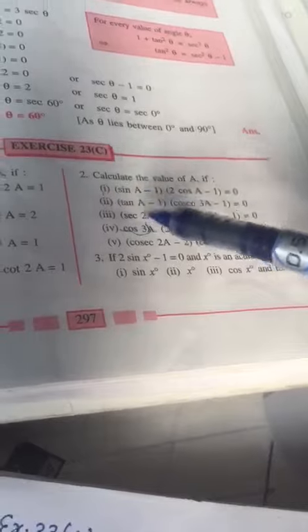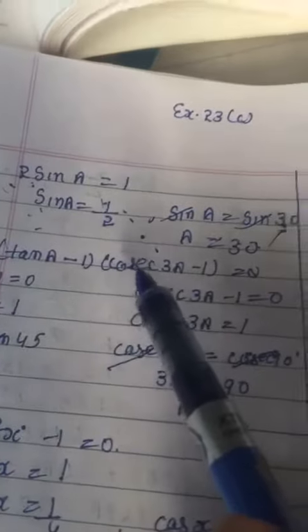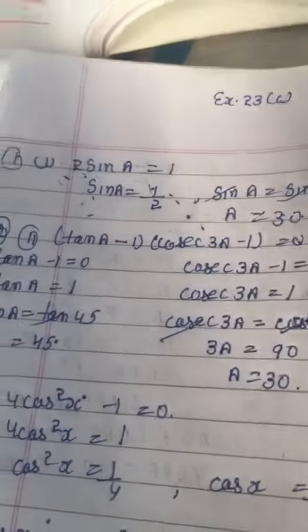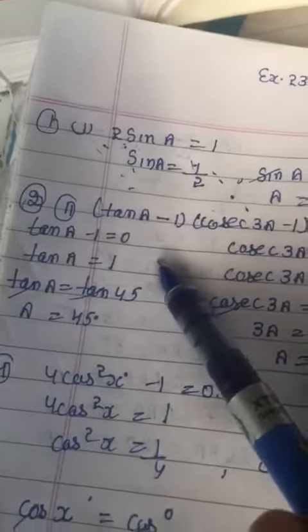In the same way, question number 2 or 3, where I am going to solve: tan A - 1 = 0 and cosec(3A - 1) = 0. So tan A - 1 = 0.